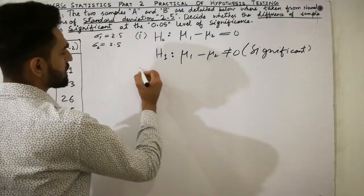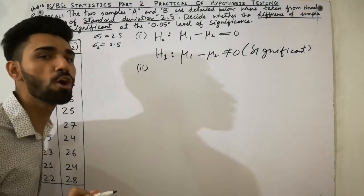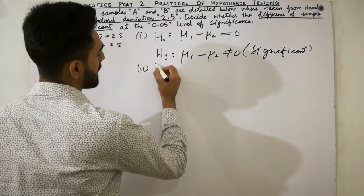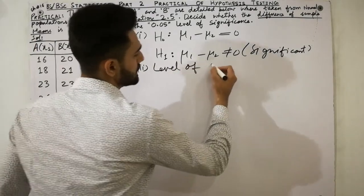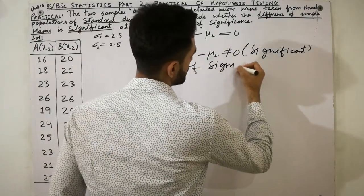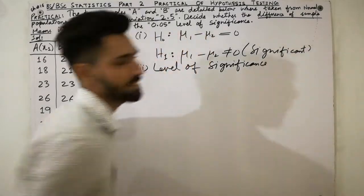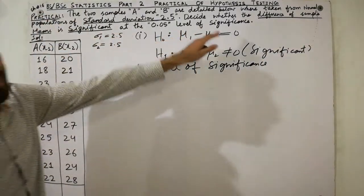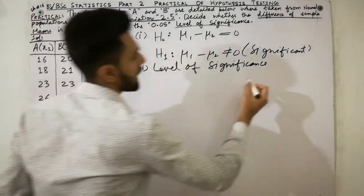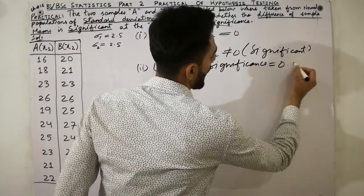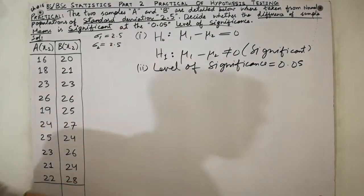The second step is the level of significance. The given value of level of significance is 0.05. So alpha = 0.05.